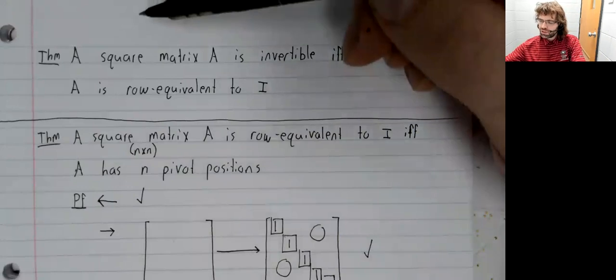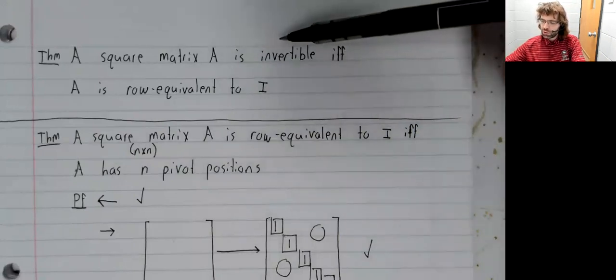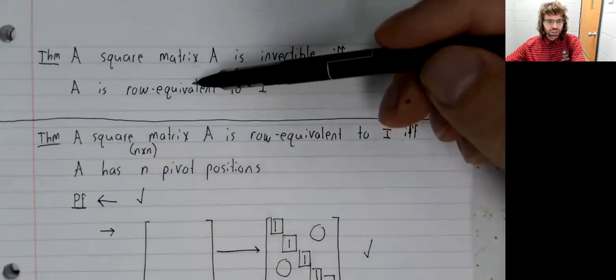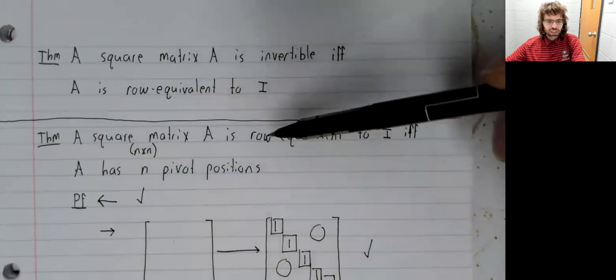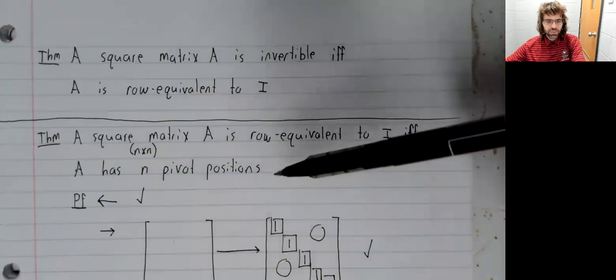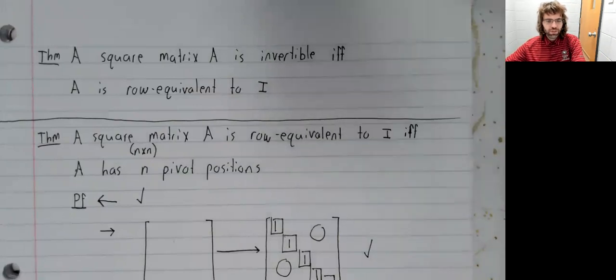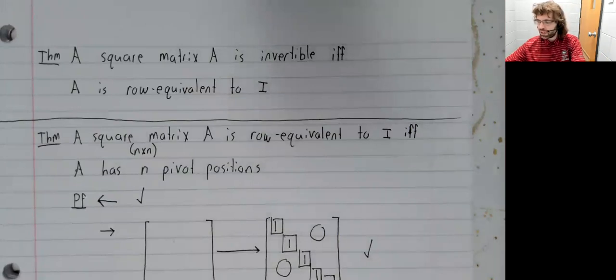Our first theorem is that a matrix is invertible if and only if it's row equivalent to I. Our second theorem is that it's row equivalent to I if and only if it has n pivot positions.